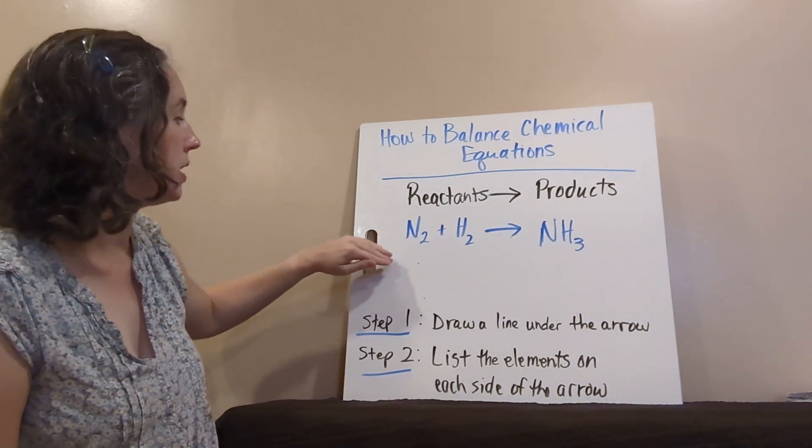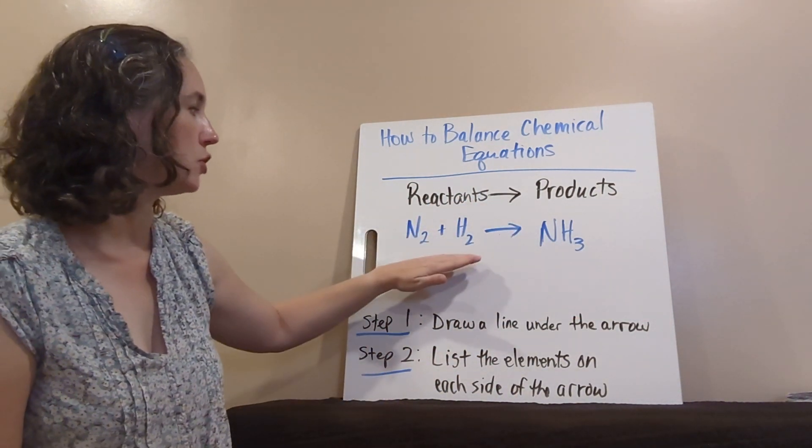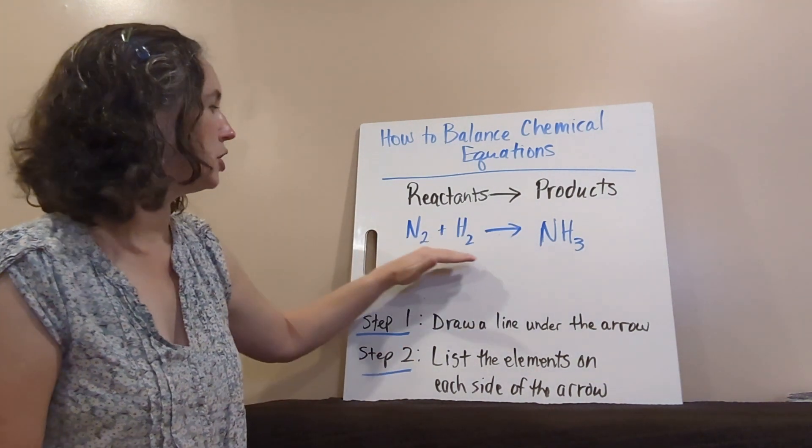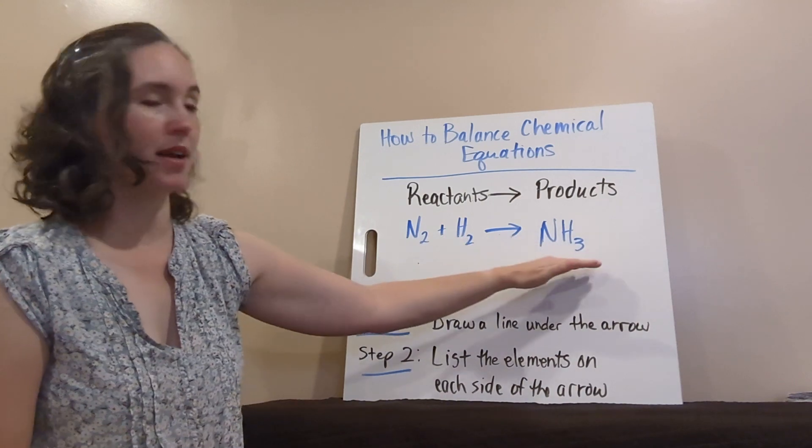In our example, we're gonna be using nitrogen gas plus hydrogen gas yields ammonia. So these are two gases, but when you put them together, they make a liquid.